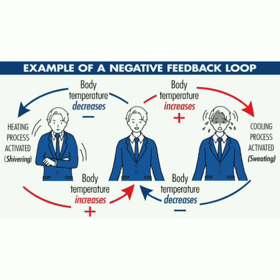An example of negative feedback is given. If body temperature increases — like in summer — the control system shows an inverse reaction: the cooling process activates, sweating occurs, and the body temperature decreases back to normal level. Similarly, in winter, if body temperature drops, this is a change in the external environment. The body shows an inverse reaction — the heating process activates, shivering starts. Once body temperature returns to the normal tolerable range, the entire mechanism stops.